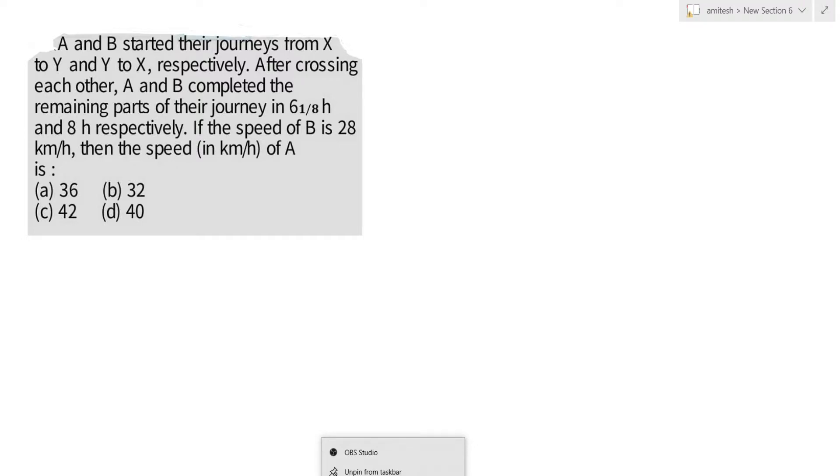A and B started their journey from X to Y and Y to X respectively. After crossing each other, A and B completed the remaining parts of their journey in 6 and 1/8 hours and 8 hours respectively. If the speed of B is 28 km per hour, then the speed of A in km per hour is?